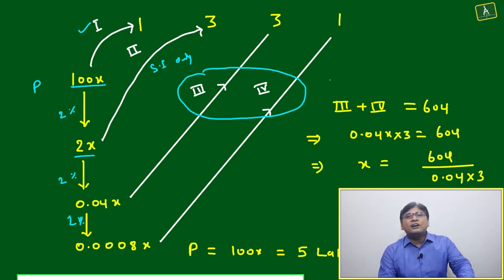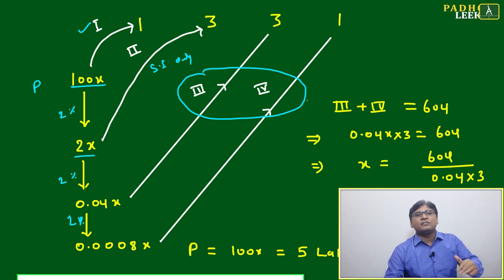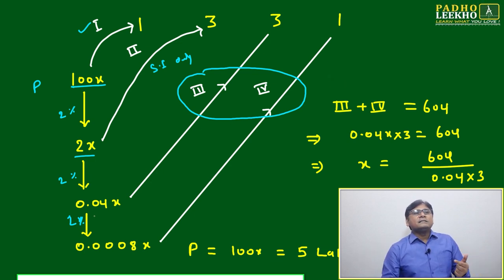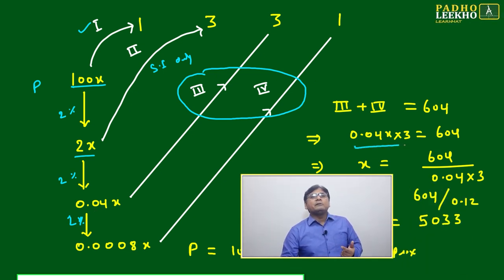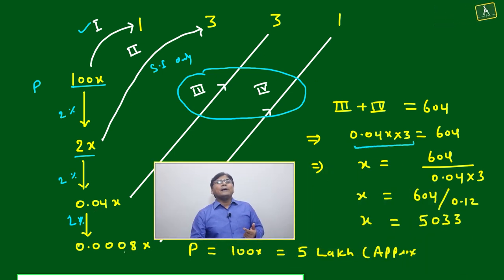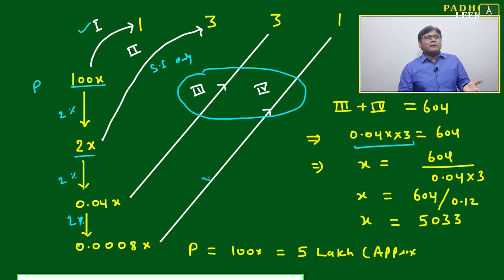We need to find the difference between simple interest and compound interest, which is the third term onwards. Third term: 0.04 times 3 becomes 0.12x. The last one is very small, we can ignore it. It won't affect the calculation. We take only the third term, 0.12x equals 604.